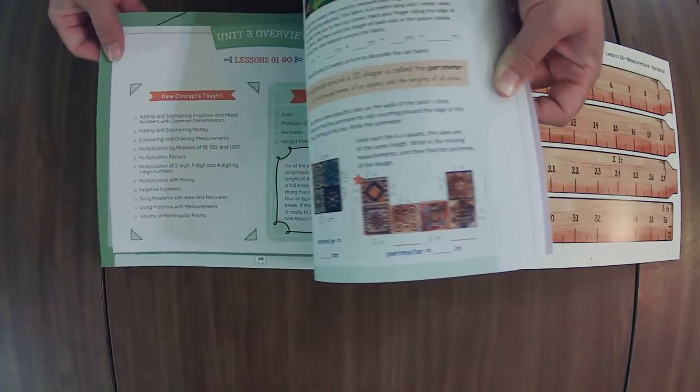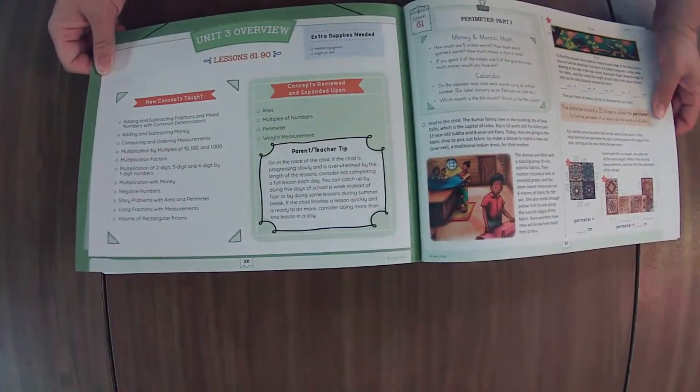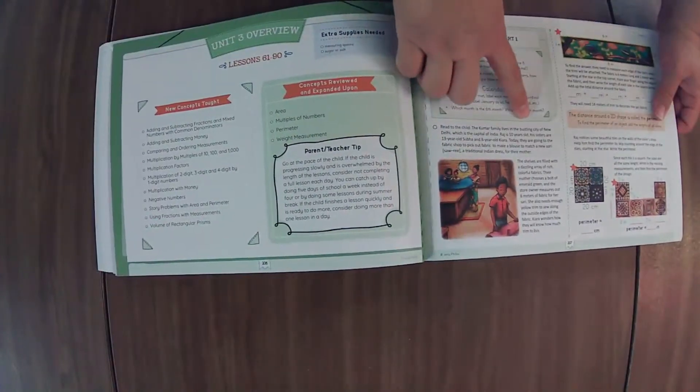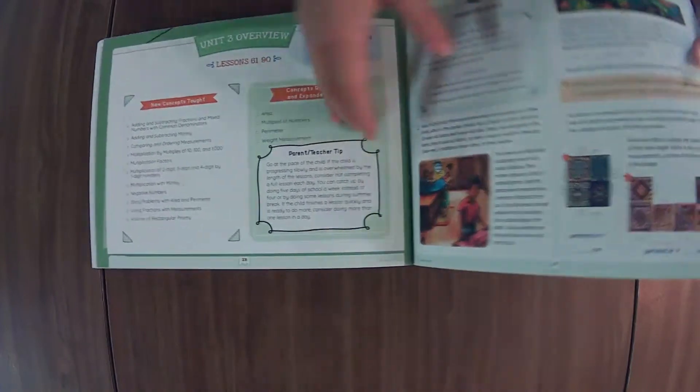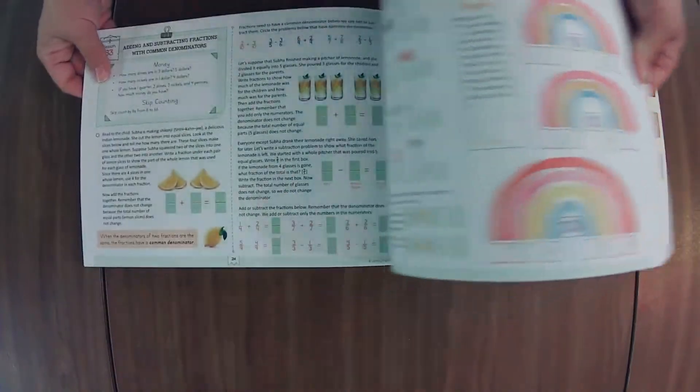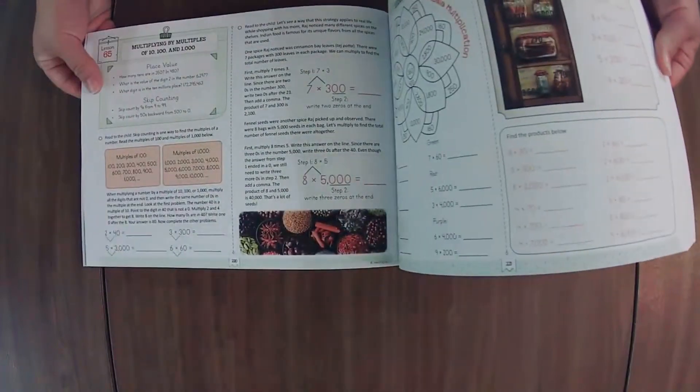And then here we have, let's see, family in a city of New Delhi. Raj. So maybe we have... I'm not sure if this is going to be one specific country, or maybe it is India. That's cool. Yeah, looks like we're covering India there. Fun. And then Unit 4 was Egypt. All right, let's check out the math box.